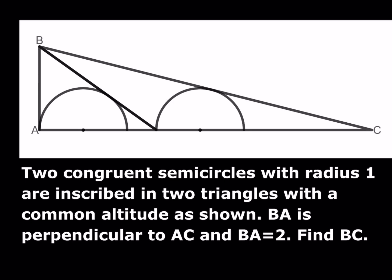We have two congruent semicircles with radius 1. They're inscribed in two triangles with a common altitude as shown. We have a right triangle BAC, and BA is equal to 2 — that's given. We're supposed to find BC. The semicircles are congruent and the radius is 1, so we have a lot of information. Let's go ahead and get started.